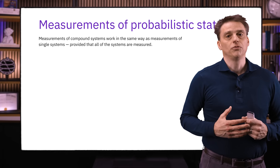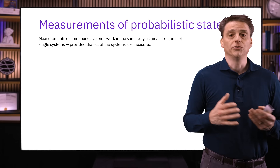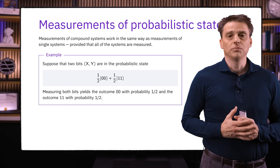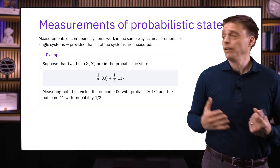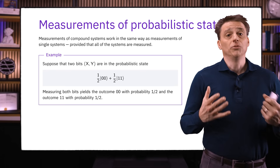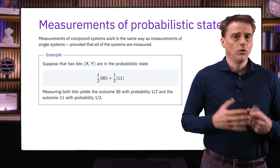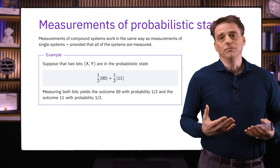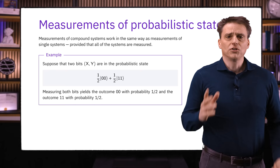Moving on to measurements of multiple systems in probabilistic states: we immediately obtain a specification for how measurements work for multiple systems by simply thinking about them collectively as single systems, provided that all systems are measured. As a simple example, suppose we have two bits X and Y collectively in the probabilistic state with probability one-half each for (0,0) and (1,1). Naturally, measuring both bits gives outcome (0,0) with probability one-half and outcome (1,1) with probability one-half. Measuring all systems is equivalent to measuring the entire compound system. If we don't measure all systems but only some of them, however, the situation isn't quite so immediately clear.